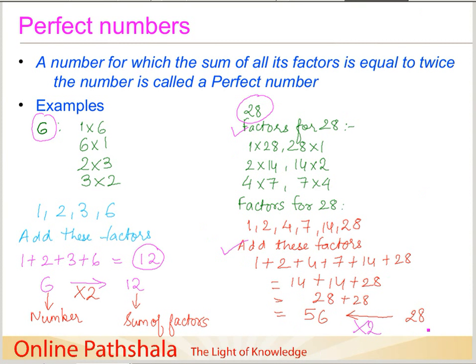What we observed is: we find a number, find its factors, add the factors, and the sum of those factors is twice the number. These types of numbers are called perfect numbers. A number for which the sum of all its factors is equal to twice the number is called a perfect number. This concludes our discussion on factors and multiples. See you in the next session when we discuss prime numbers.